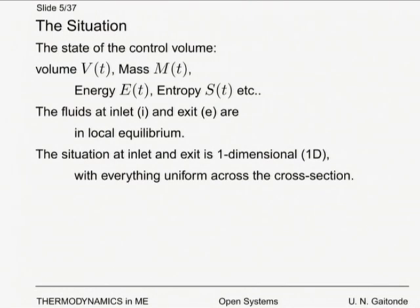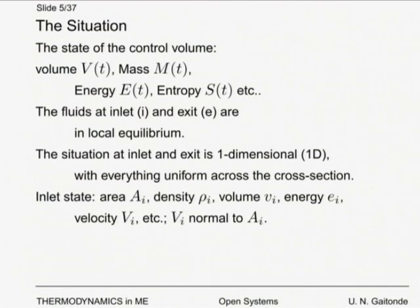For algebraic simplicity we assume the flow at inlet and exit is one-dimensional, meaning everything is uniform across the cross section. This lets us write mass flow rate as an algebraic expression rather than integrating ρ·v_normal·dA over the surface. The inlet state is represented by subscript i — giving area A_i, density ρ_i, specific volume v_i, specific energy e_i, and mass flow rate ṁ_i.